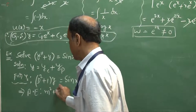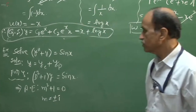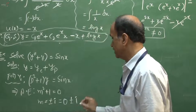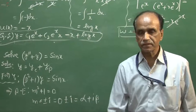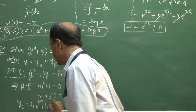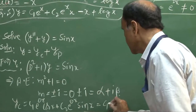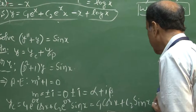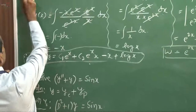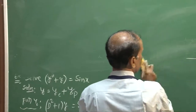The auxiliary equation is m square plus 1 equals 0, giving m equal to plus or minus i — imaginary roots. This is written as 0 plus or minus 1 times i, that is alpha plus or minus i beta. Therefore the complementary function yc equals c1 cos x plus c2 sin x, which equals c1 y1 plus c2 y2, where y1 equals cos x and y2 equals sin x are linearly independent solutions.